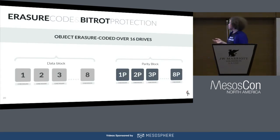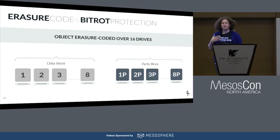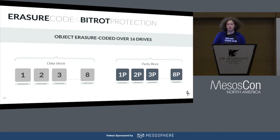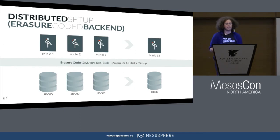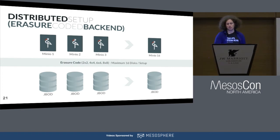With erasure coding across 16 nodes, each block is split into 8 data blocks and 8 parity blocks spread across different nodes. This means the system can survive up to 8 node failures, because the data can always be reconstructed from the remaining nodes — it doesn't matter which 8 nodes fail as long as it's no more than 8. This gives a pretty nice setup; 16 disks is already quite a large chunk of data to store.